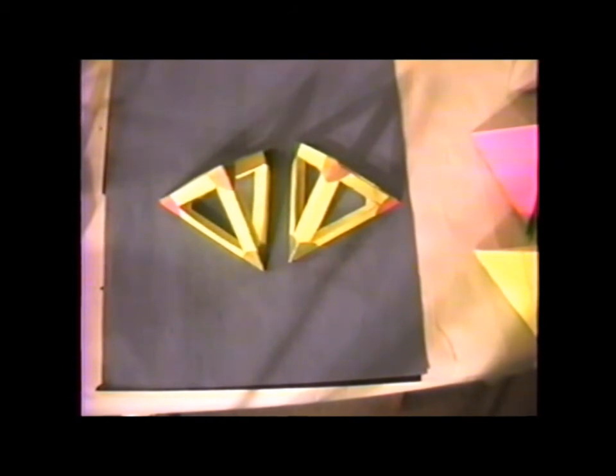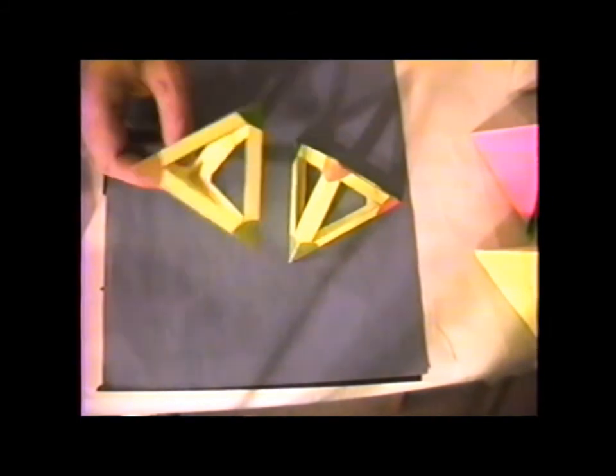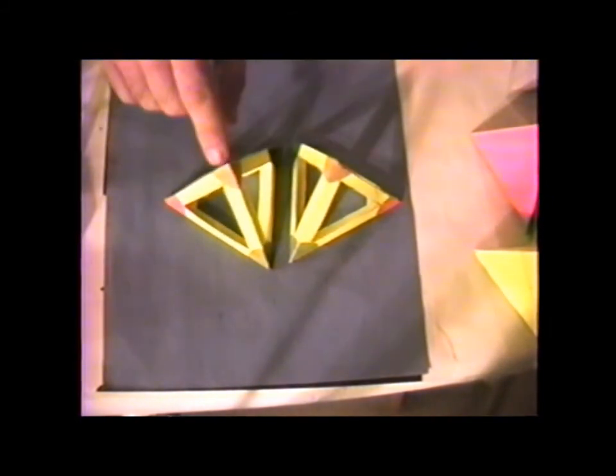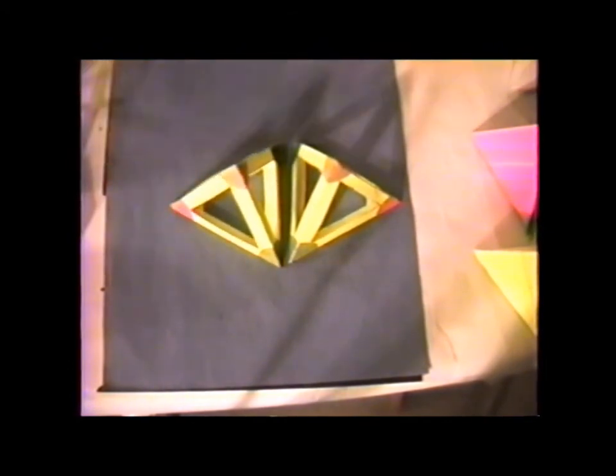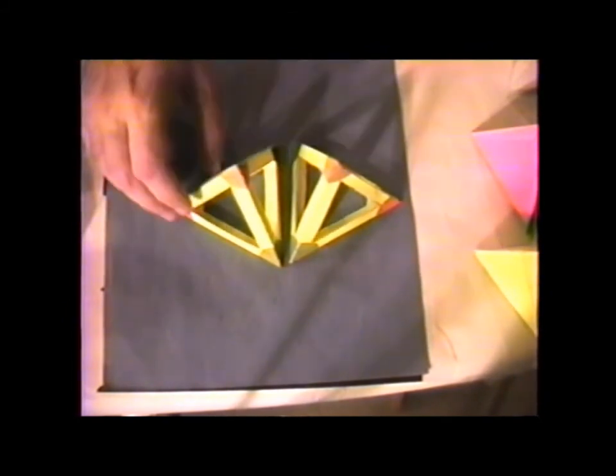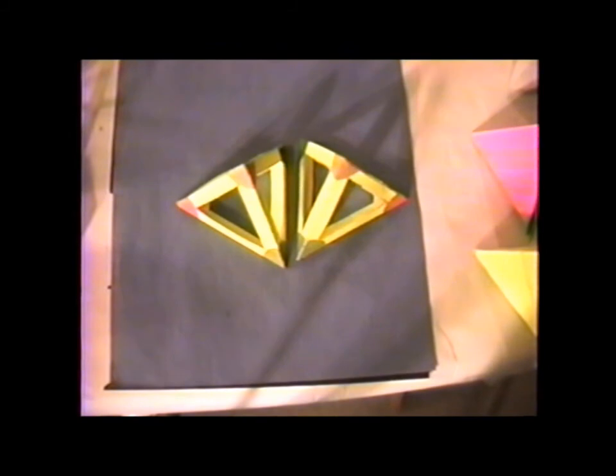We use a system called the Cahn-Ingold-Prelog system, and the way of determining it depends very much on a sequence of rules and how we rank the priorities of the various different substituents. Well, using these types of tetrahedra, a student is free to write or change the colors of the different substituents and then practice determining whether it's right handed, rectus, R, or it's left handed, S, sinister. So it's a very effective tool, among other things, in practicing the assignments of optical activity based upon the Cahn-Ingold-Prelog system.